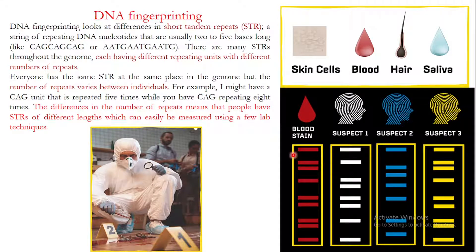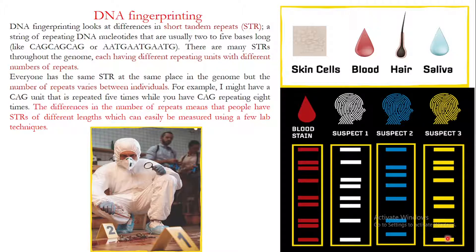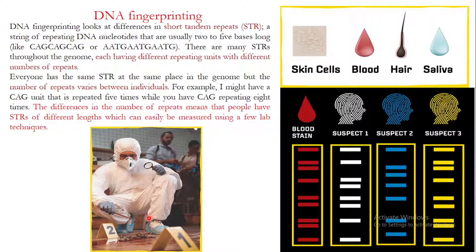For example, if you have blood from a crime scene and you run the DNA from that blood, you get a particular banding pattern. With three suspects, you run the DNA of each suspect and compare their bands with the DNA recovered from the crime scene. If suspect number three's banding pattern matches the crime scene DNA — while suspects one and two show differences — then suspect number three is identified as the criminal. This is how DNA fingerprinting works as an important application of genetics.